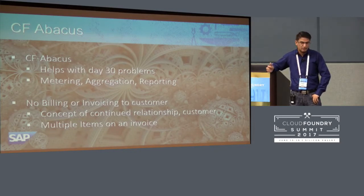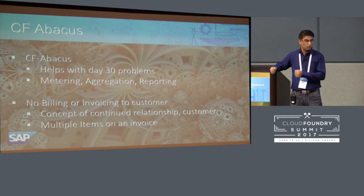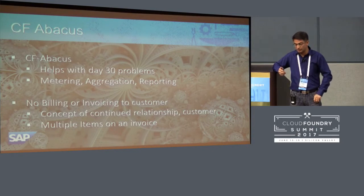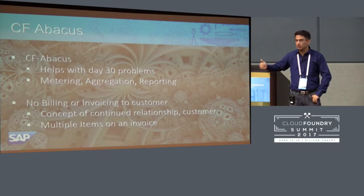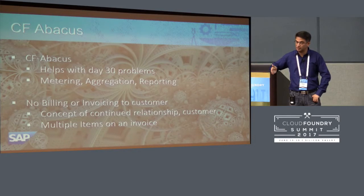CF Abacus has certain limitations — these were the constraints they designed the system with. It's not an invoicing or billing system; you cannot send an invoice to a customer. For internal allocation it's fine, like Comcast charging their internal developers or organizations. But when it's SAP, Google, AWS, or Pivotal, they need to send invoices to their customers — that part is not covered by CF Abacus.